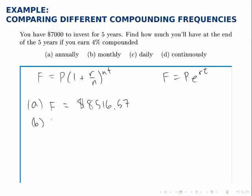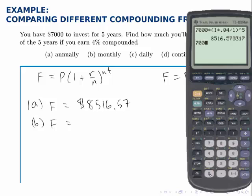For part b, we do the same exact calculation, all that changes is what n equals. So I do 7,000 times again, 1 plus .04, this time divided by 12, because it's compounded monthly, so n is 12, raised to the power 12, again n, times 5t. And we find that the second account, if the interest is compounded monthly, the final balance will be $8,546.98.